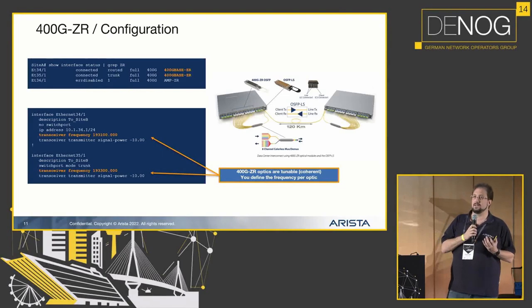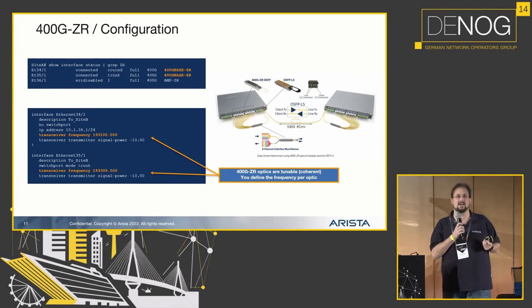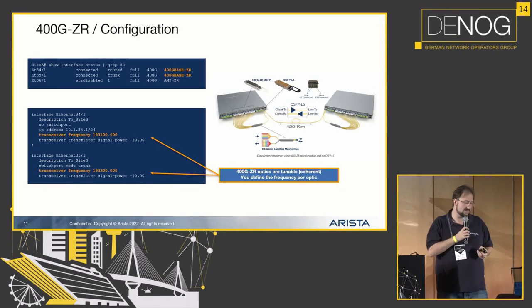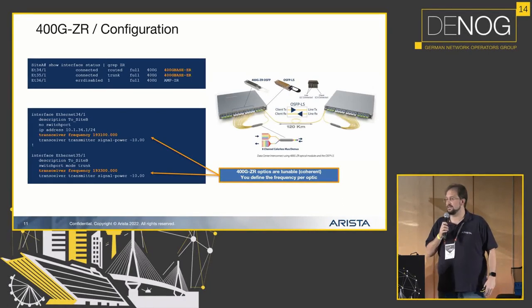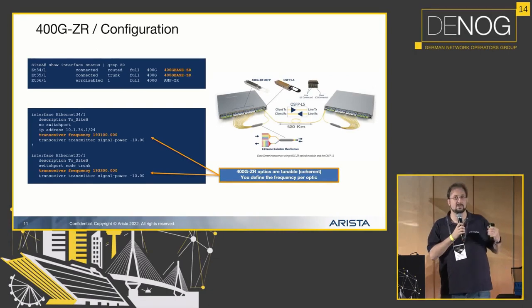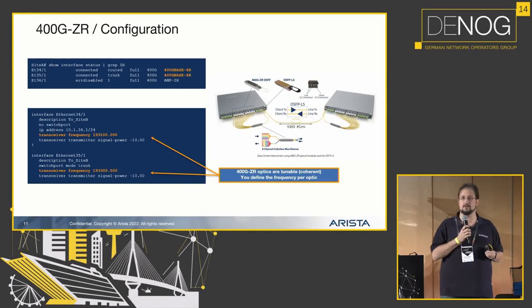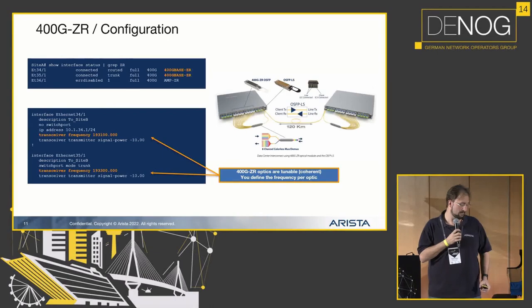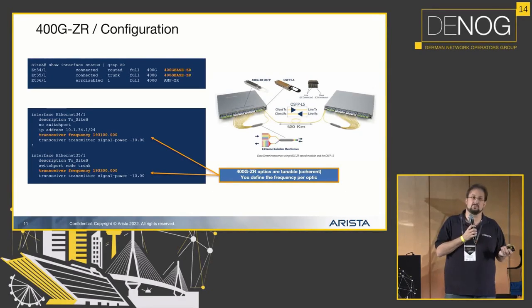When you configure something like a 400G ZR, it is actually pretty cool because it's a tunable transceiver. You just need one kind of transceiver — not like the old 10G passive DWDM days where you bought a transceiver for channel 30 or 32. Here you configure the frequency on the interface, as you can see in the config snippet. In the example, we used an amplifier in a transceiver form factor, because the optic itself has a very low launch power. If you build it brownfield, you need a preamp, or what Arista has: a point-to-point line system where the transceiver in the switch acts as both the booster and the preamp.